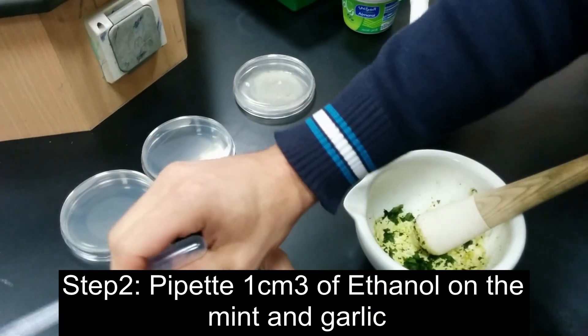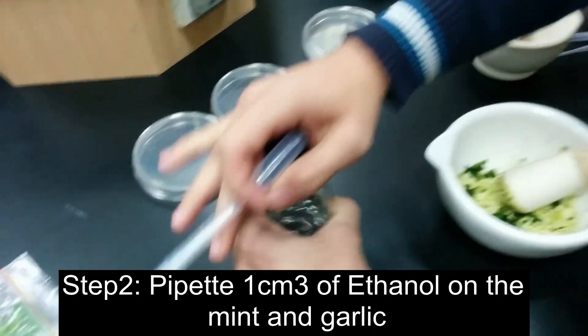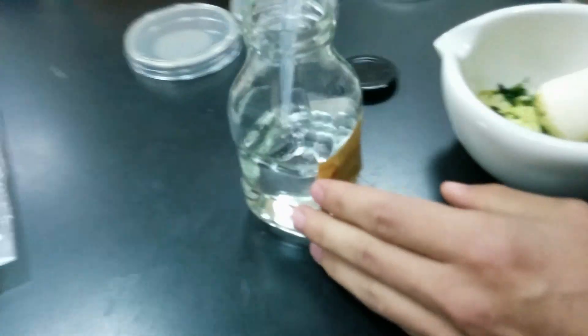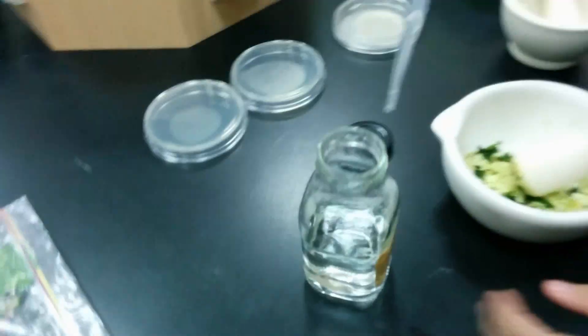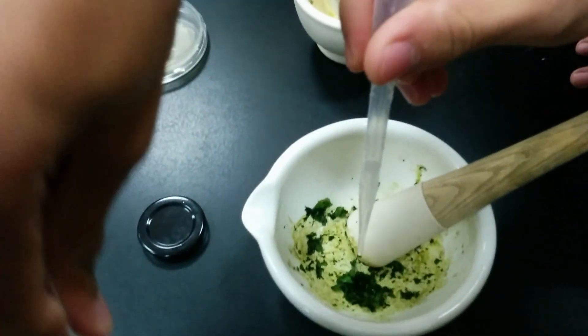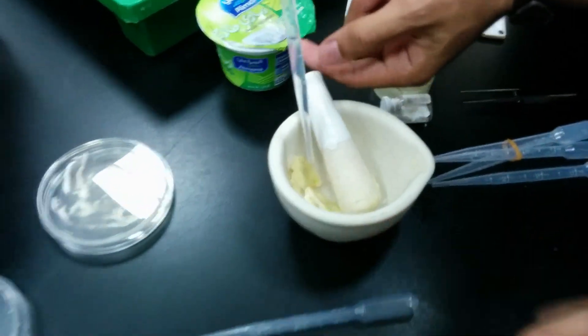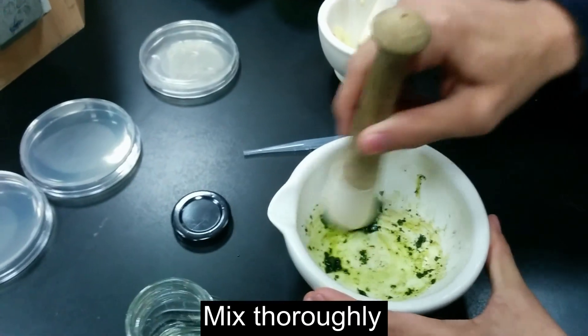Now we have to add one pipette of ethanol to the crushed mint leaves. Then we have to mix it again.